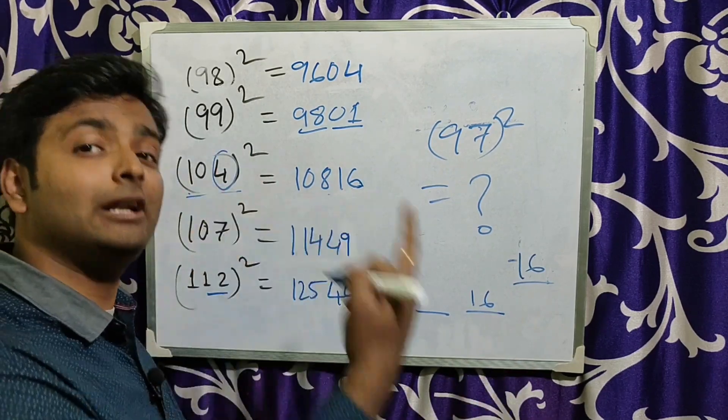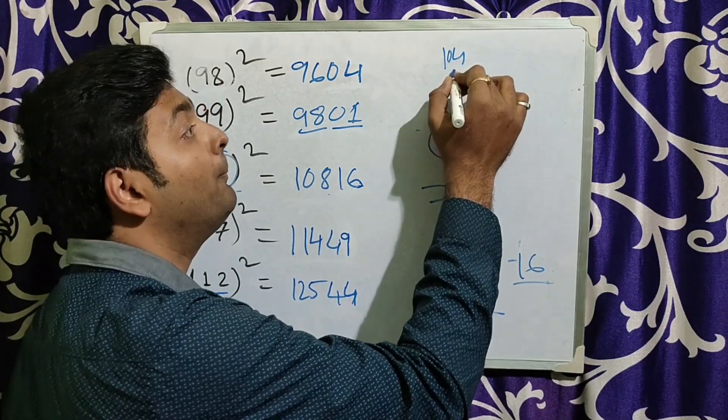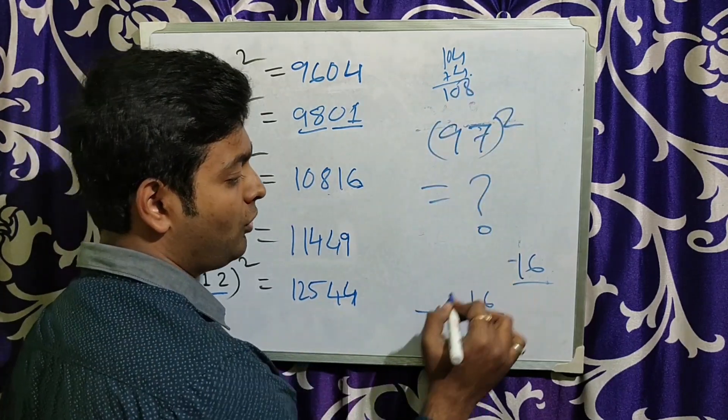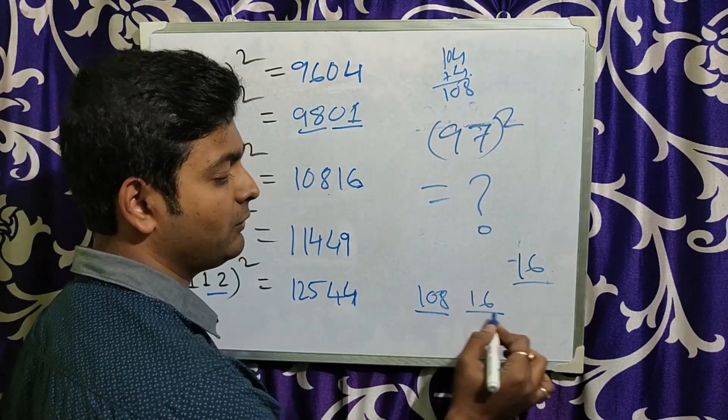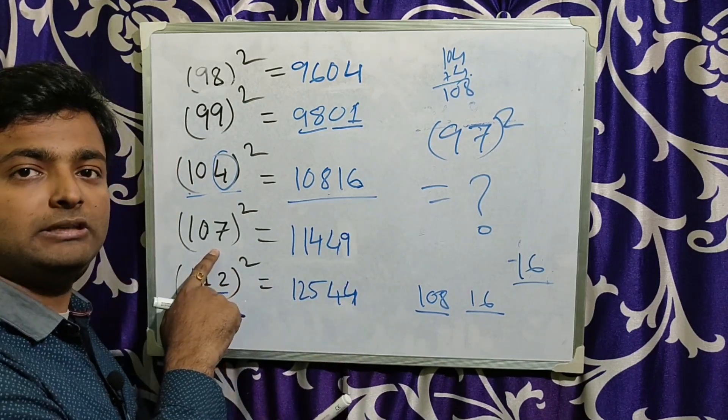Now this is more than 100. That means 104 the number itself plus how much more than? Plus 4. That is 108. You can see that. Simply try to do this.